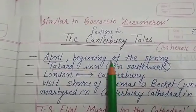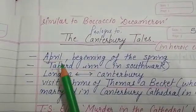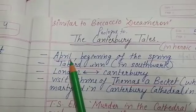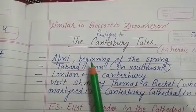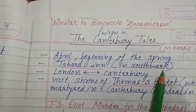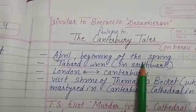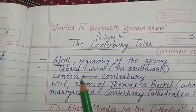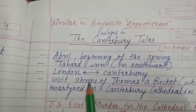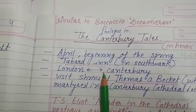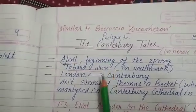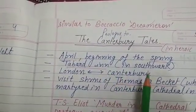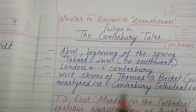Canterbury Tales mentions the month of April — it opens with the April month. April is the beginning of the spring season. In this month, pilgrims from different parts of the city meet at Tabard Inn. Tabard Inn is situated in Southwark, which is in London.